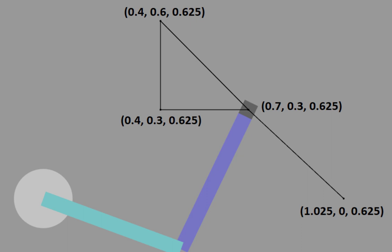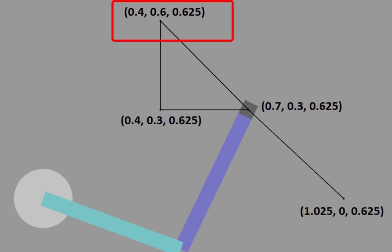After that, the robot should move upwards, and then follow this trajectory and reach the drop-off location. The coordinates of the drop-off location are 0.4, 0.6, and 0.625.